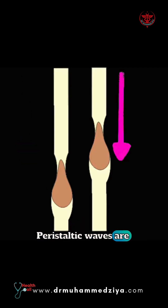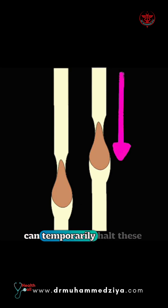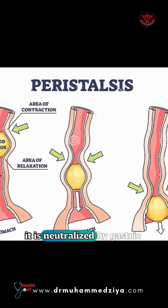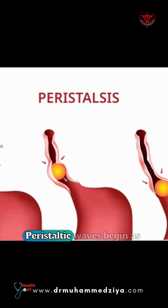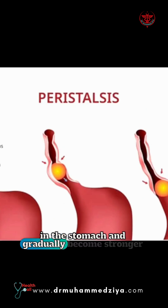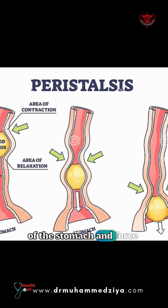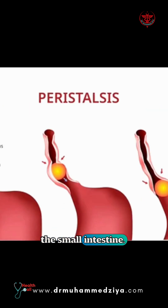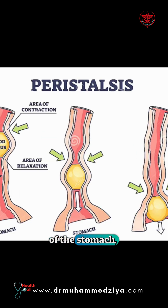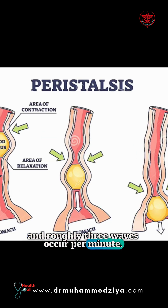Peristaltic waves are reduced when the stomach is full. The inclusion of fat in a meal can temporarily halt these motions until it is neutralized by gastric secretions or eliminated from the stomach. Peristaltic waves begin as weak contractions in the stomach and gradually become stronger as they approach the distal stomach regions. The waves help to mix the contents of the stomach and force food to the small intestine. Two to three waves are usually present at the same moment in different parts of the stomach, and roughly three waves occur per minute.